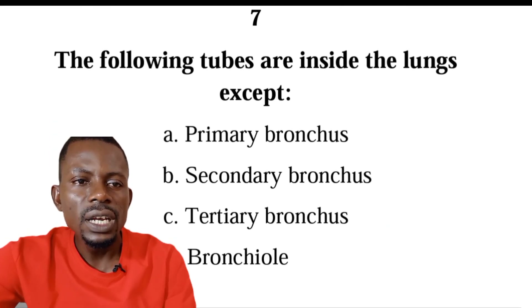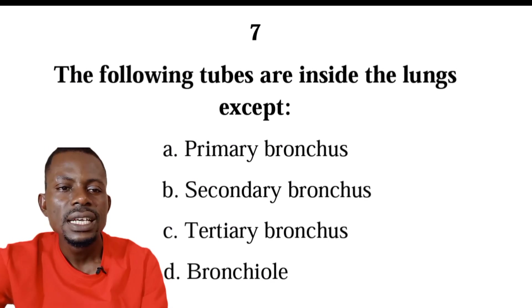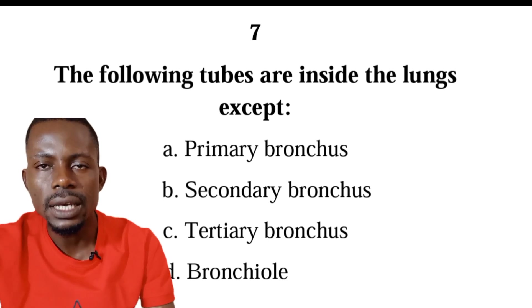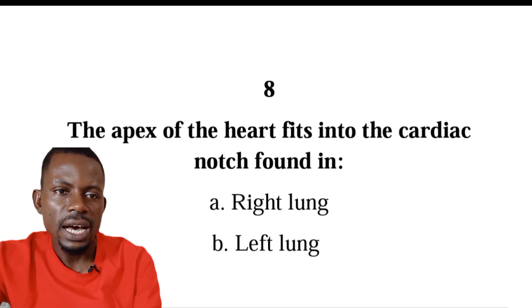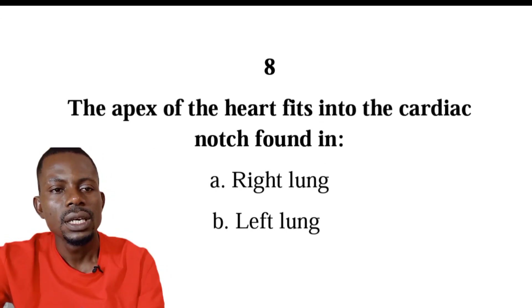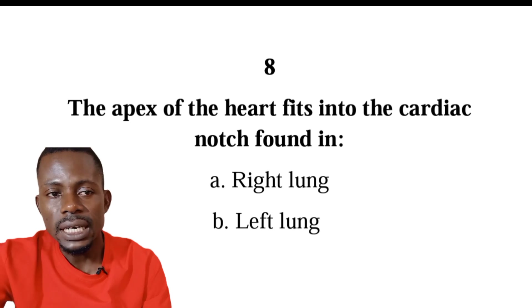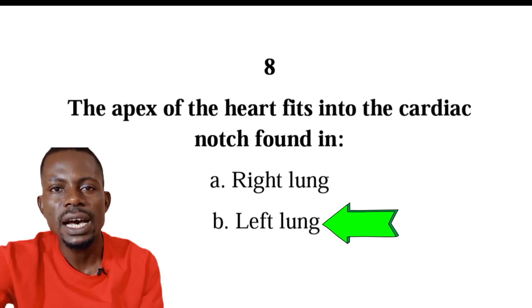Number seven: the following tubes are inside the lungs except — we have primary bronchus, secondary bronchus, tertiary bronchus, or bronchiole. The correct answer is A, primary bronchus. Number eight: the apex of the heart fits into the cardiac notch found in which lung? The correct answer is B, the left lung. The left lung has a space known as the cardiac notch, and this is where the apex of the heart fits in.